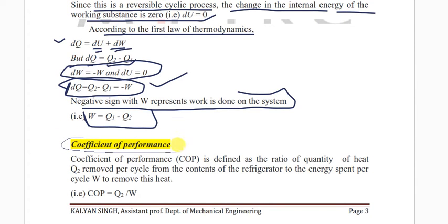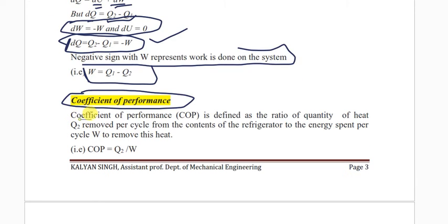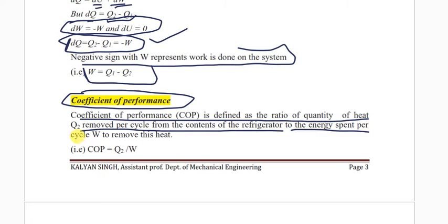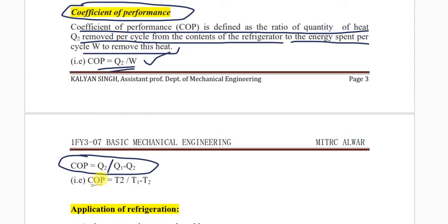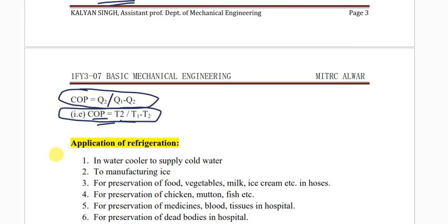The coefficient of performance is defined as the ratio of the quantity of heat Q2 removed per cycle from the contents of the refrigerator to the energy spent per cycle W to remove this heat. COP = Q2 / W = Q2 / (Q1 − Q2), and COP = T2 / (T1 − T2).